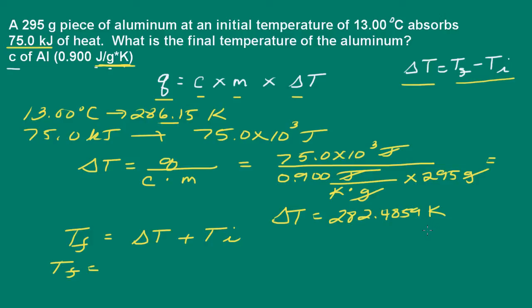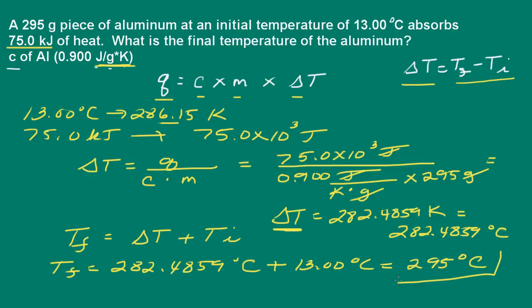But remember, a Kelvin unit is equal to a Celsius degree. So they're the same size. And this is delta T, it's a change in temperature. So we can say then that this is equal to 282.4859 degrees Celsius. So now I can find my final temperature, and that's 282.4859 degrees Celsius plus our initial temperature, which was 13 degrees Celsius. And this is going to give us 295 degrees Celsius.